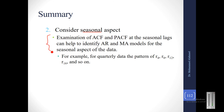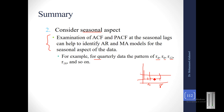Then consider the seasonal aspect. The seasonal aspect is similar in nature, except you need to difference the seasonal series. For example, if you have quarterly data, you may see spikes at lags 4, 8, and 12 in the ACF — these correspond to the 4th month, 8th month, and so on. Other points may be lying in between.